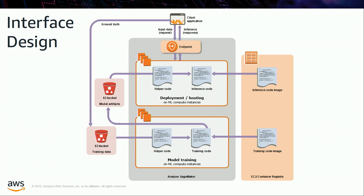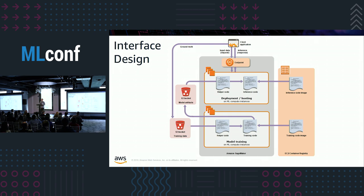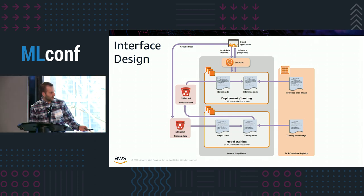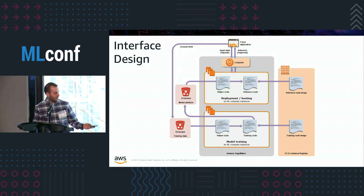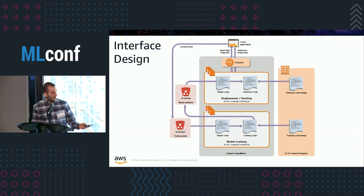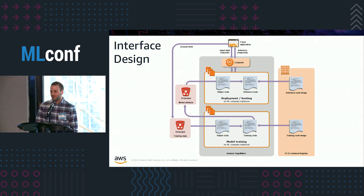Let's deep dive into interface design. We have the training and inference code encapsulated into a Docker container that's uploaded to EC2 Container Registry, and then you bring that to a SageMaker training job. You have your dataset in S3, and the SageMaker platform runs your training job. As output, you get a model artifact in S3, which you can then use for inference — either offline in a batch transform job, or online with a hosted endpoint, where a client application sends requests with unlabeled data and gets back predictions.